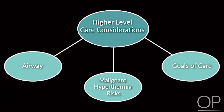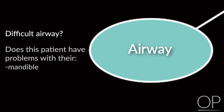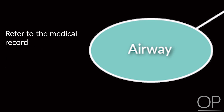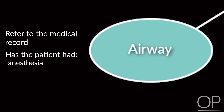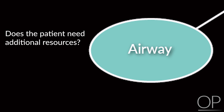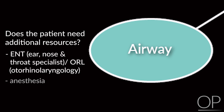Higher-level care considerations: would this patient be a difficult airway if you had to intubate? Do they have problems with their mandible, mid-face, or neck movement that would make intubation challenging — for yourself, anesthesia, an ICU fellow, or other staff? Start with the medical record: have they had anesthesia or procedural sedation before? That gives you a sense of whether you need additional resources — ENT, ORL, anesthesia, or the ICU — and whether other contingencies need to be in place.